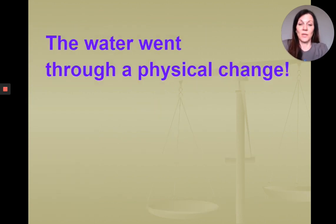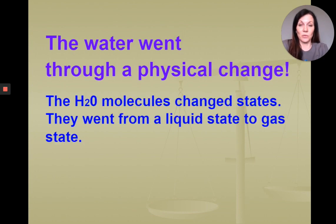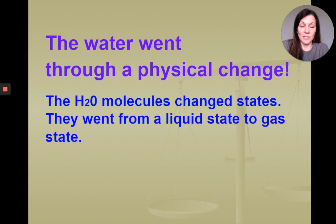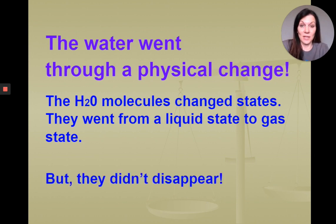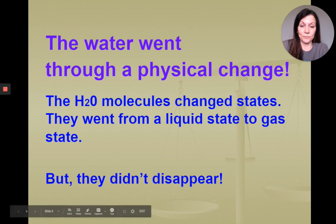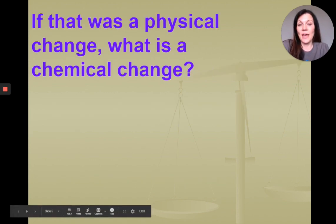The water underwent a physical change and those water molecules changed their state of matter. They went from a liquid state to a gas state through evaporation into the air. So they did not disappear — they just changed their physical form. So if that was a physical change, then what's a chemical change?